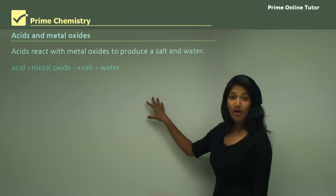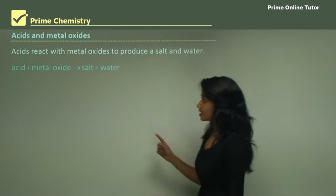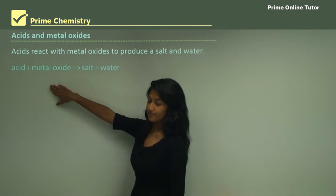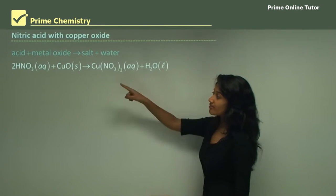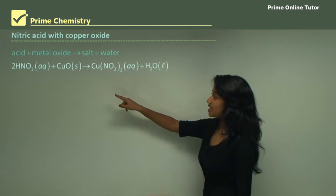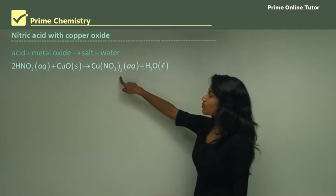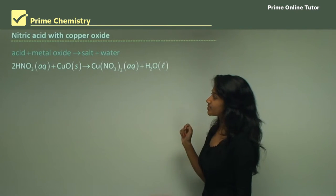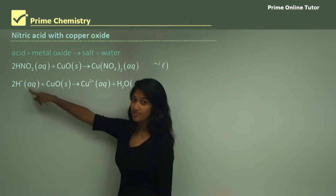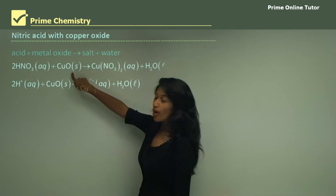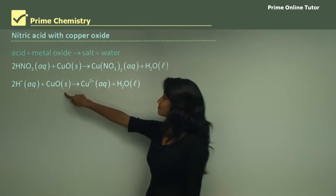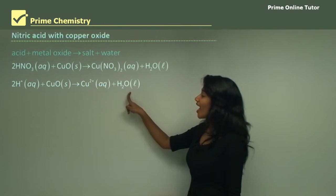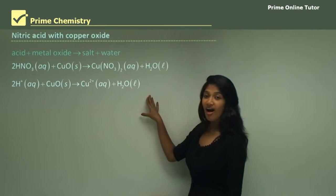When acids react with metal oxides, a salt and water are also produced, though the salt depends on the acid and metal oxide used. For example, nitric acid reacting with copper oxide (a solid) forms copper nitrate (aqueous) and water. Copper oxide, being a solid, does not ionize, but copper nitrate in solution ionizes to form copper ions and water. This gives us our ionic equation.